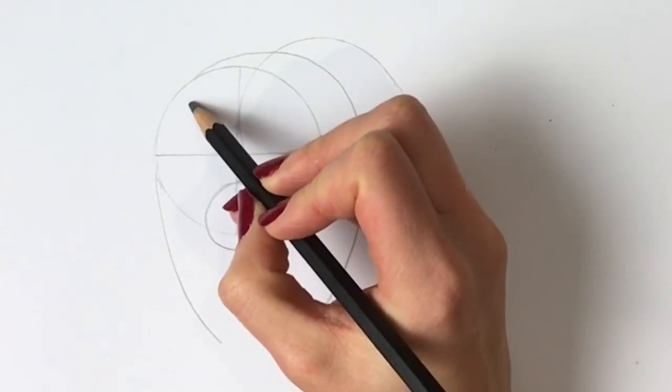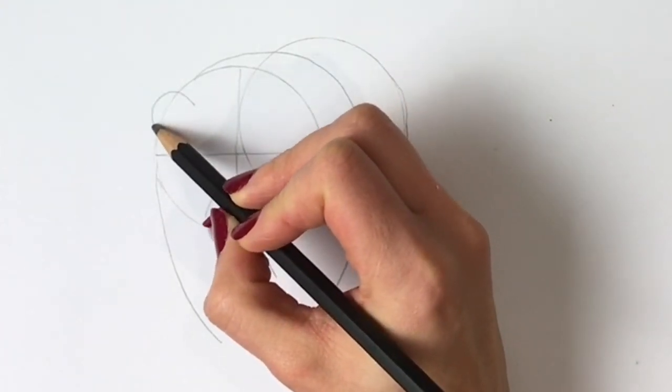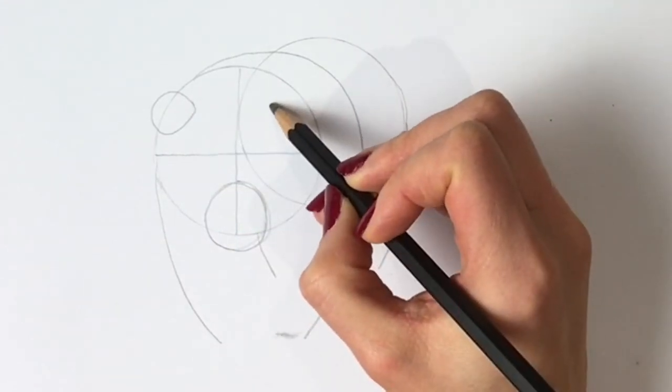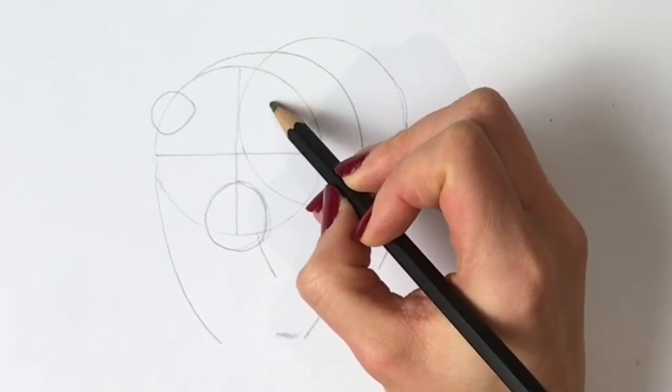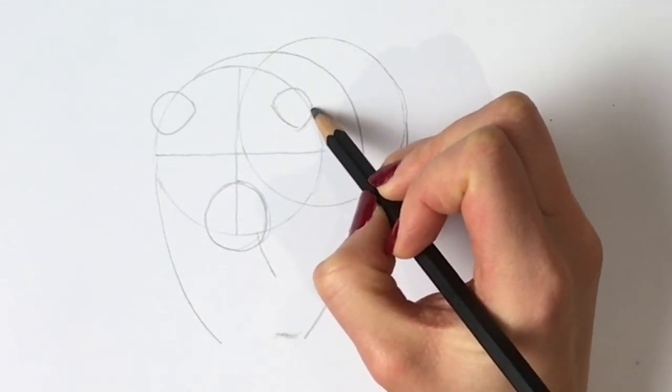We're going to do the ears. So one ear here. Just rough shapes, don't worry if you don't get exact. And another one on the other side.